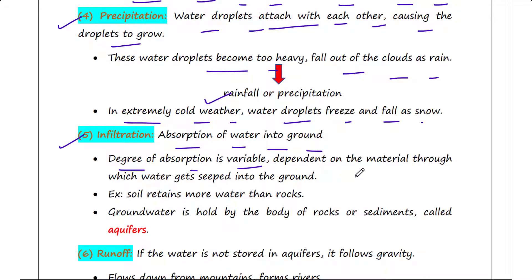For example, soil retains comparatively more water than rocks. Groundwater is held by the body of rocks or sediments. Those are called aquifers.